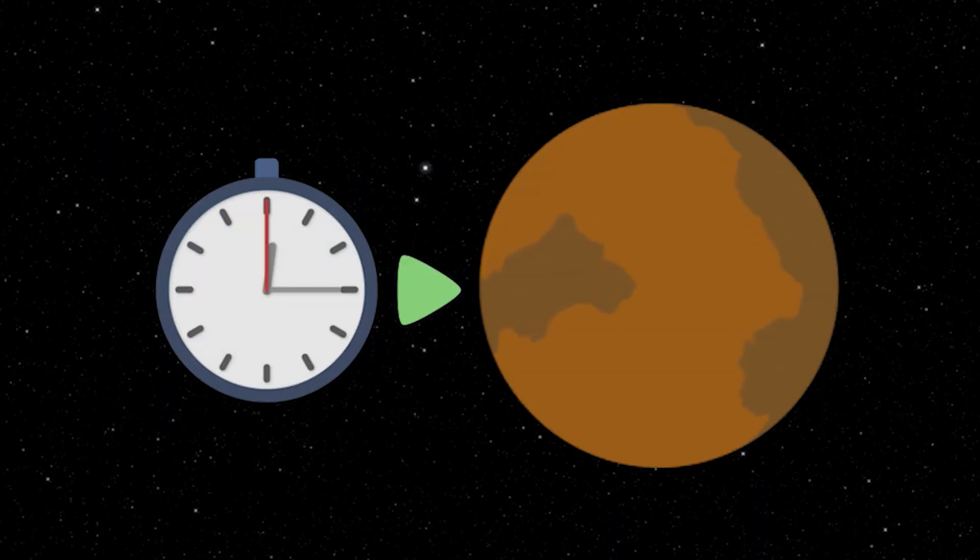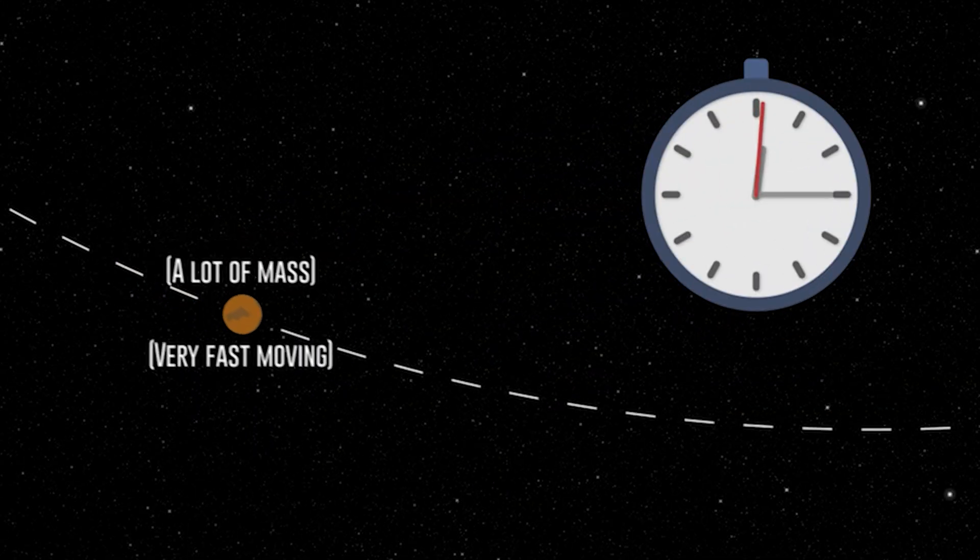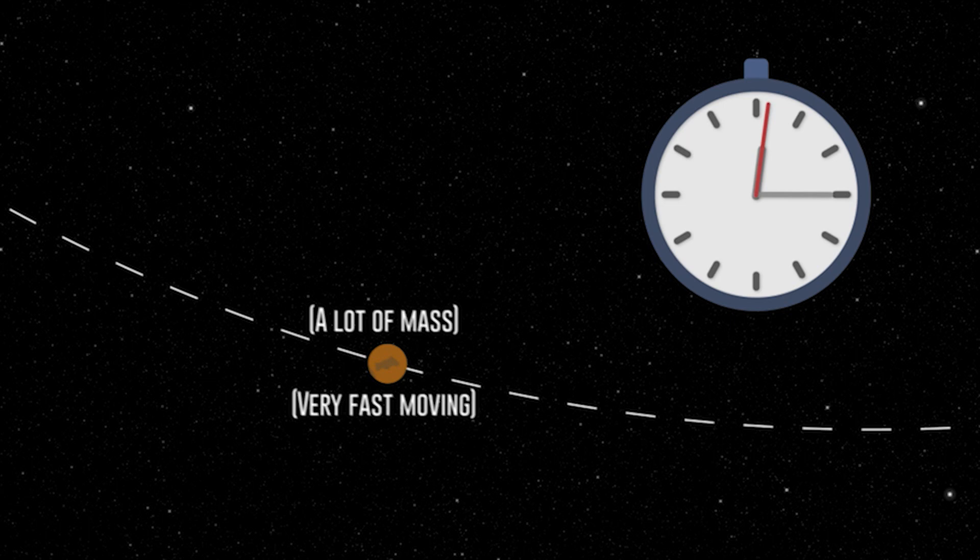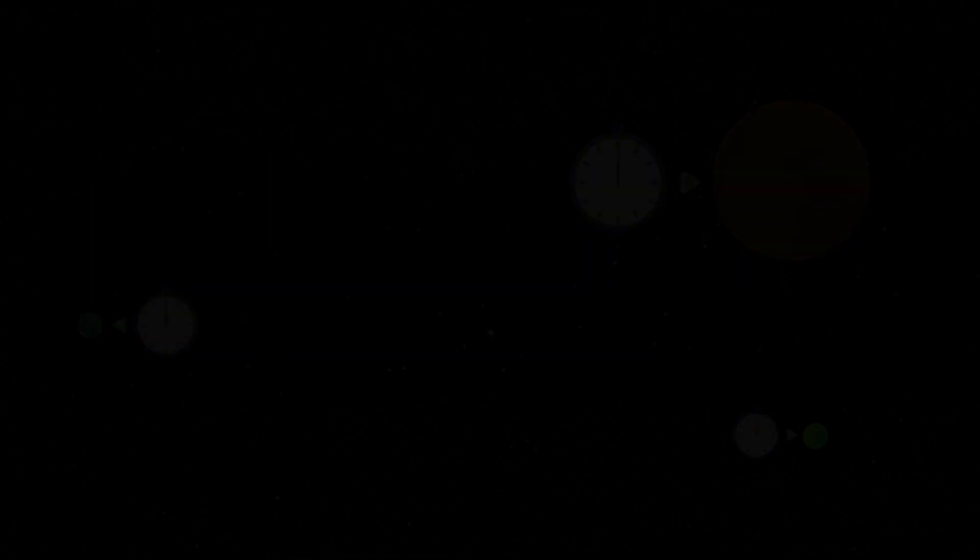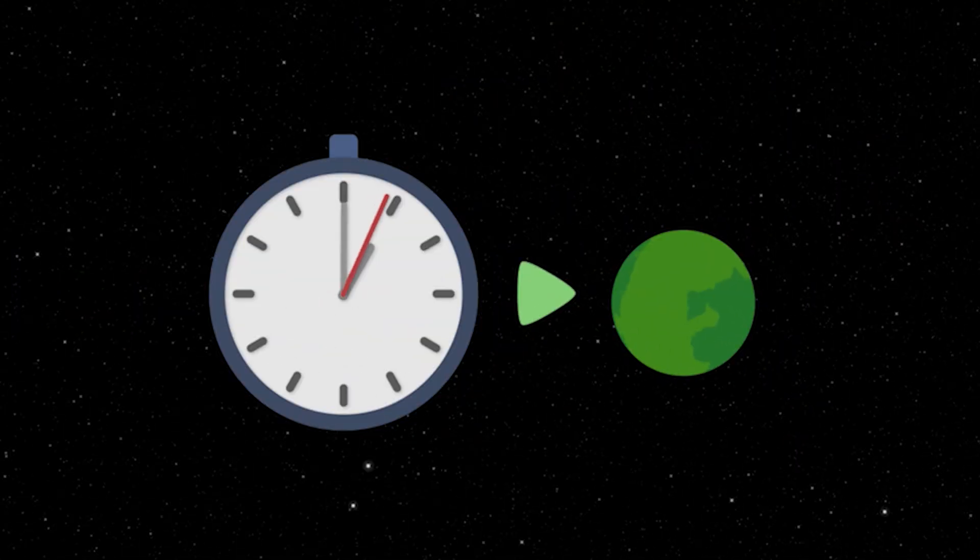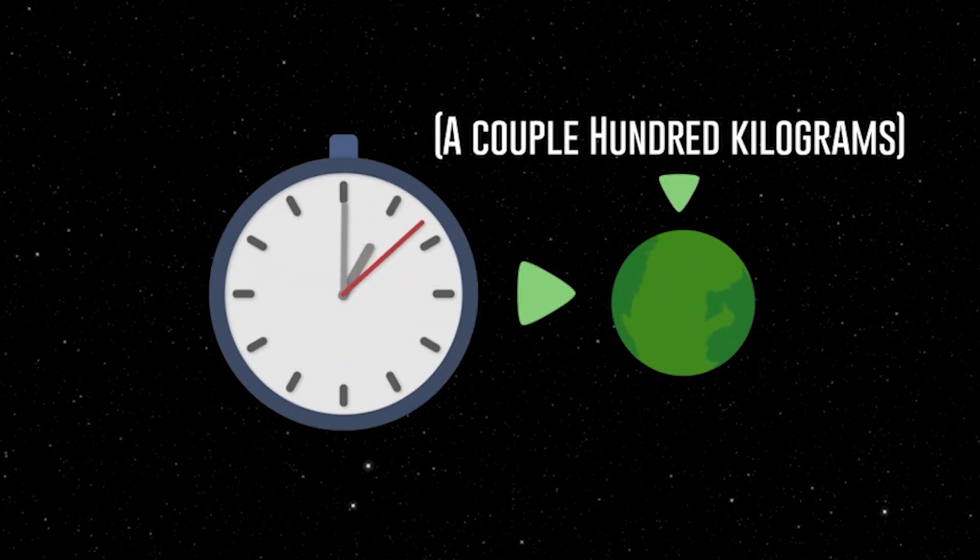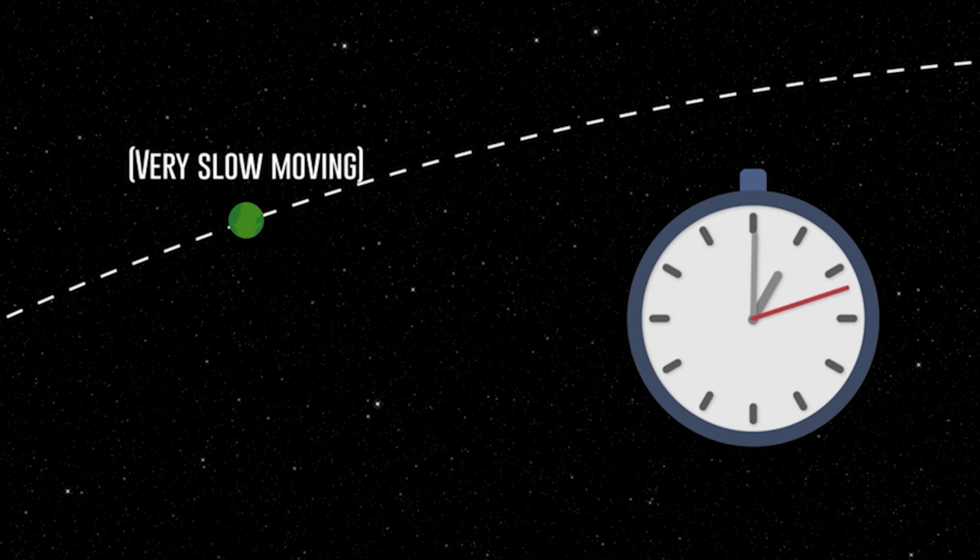So looking back at stopwatch 2, it now makes sense that 15 minutes has passed, because its planet was so massive and so fast moving that it experienced time slower. And with that in mind, we can conclude that time is affected by mass and motion. So since stopwatch 3 experienced time faster, we know its planet must have a very low mass, and or, it must be moving fairly slow through space.